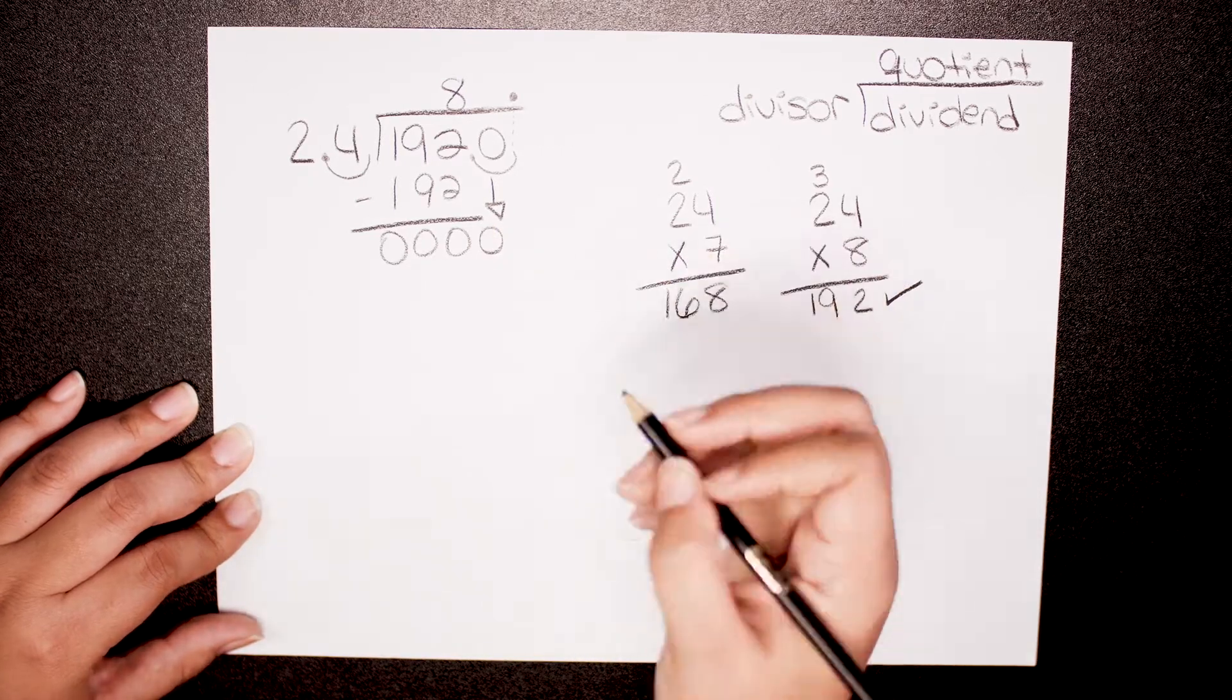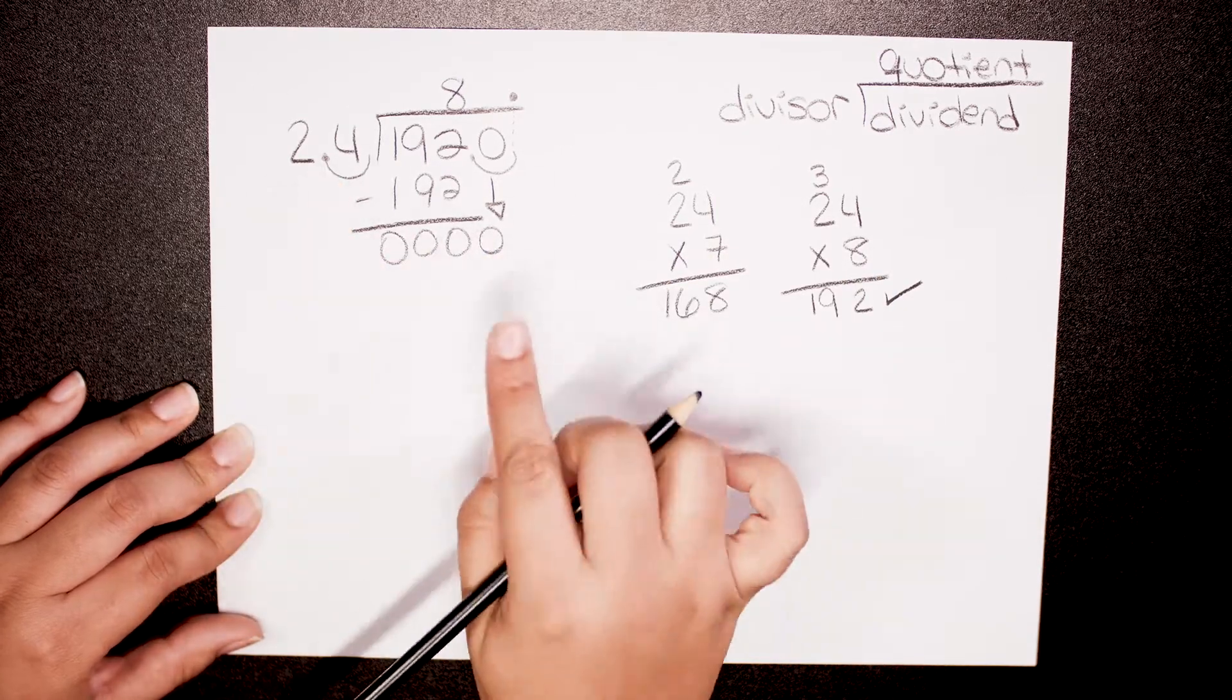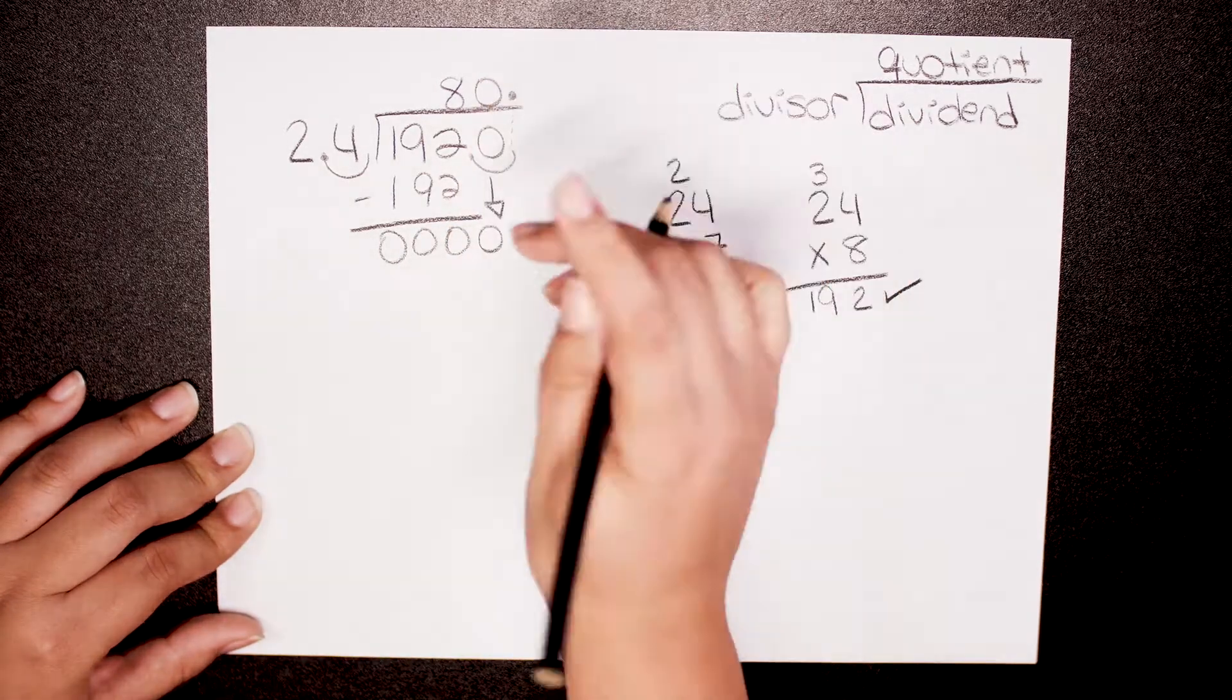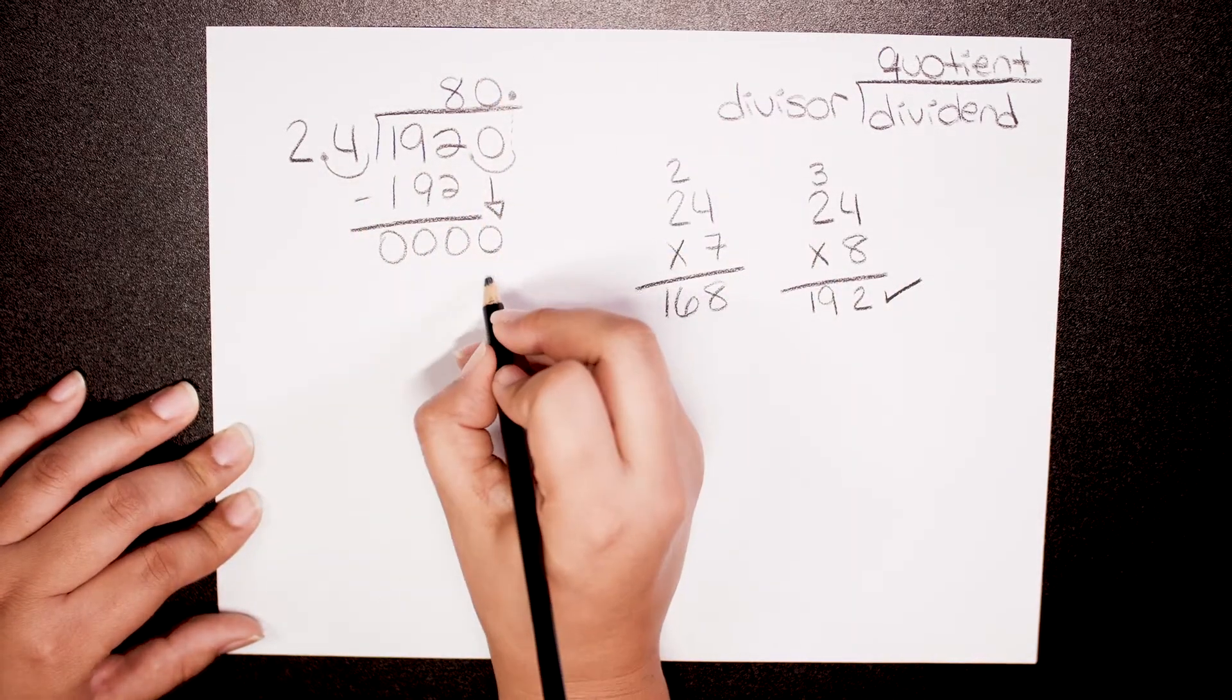So how many times does 24 fit into 0? Well actually it's 0 times because 24 times 0 is 0 again.